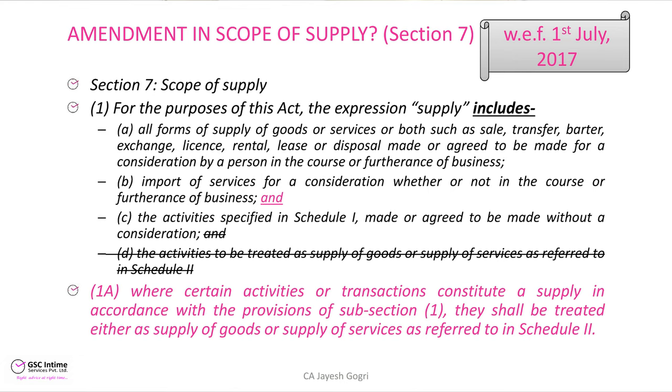For example, there is a supply of goods by an association to a member. Whether that would be regarded as supply or not — Schedule 2 was defining it as supply of goods. Though in normal parlance, supply requires presence of two persons, here there was a probability that even though club and members could be regarded as the same person, since it is defined in Schedule 2, it would be regarded as supply. Now a very important amendment has been made: Clause D has been completely deleted with retrospective effect from 1st July 2017 — ever since GST law was implemented.